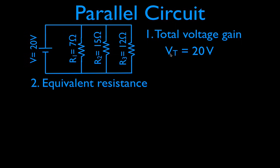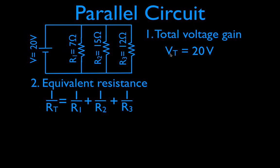Now we're going to do the equivalent resistance, and this is the tricky part. You remember in series circuits we just added them up — that would be 7 plus 15 plus 12. You cannot do that in a parallel circuit. You have to use this equation. To figure out the equivalent resistance you must use: 1 over RT equals 1 over R1 plus 1 over R2 plus 1 over R3.